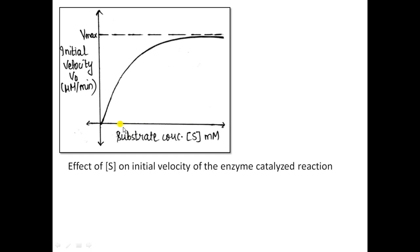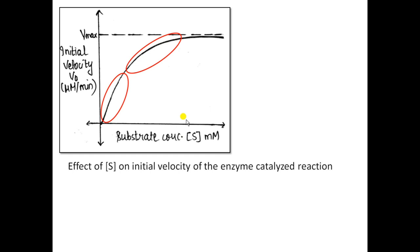Looking at the results: plotting different substrate concentrations on the x-axis and the initial rate on the y-axis gives the Michaelis-Menten plot — the effect of substrate concentration on initial velocity of an enzyme-catalyzed reaction. At low substrate concentration, increasing substrate gives a linear increase in rate. Beyond that, further increases in substrate concentration still increase the rate but less dramatically. Finally, further increase in substrate concentration gives no increase in initial velocity — a plateau is achieved — and this plateau represents the maximum velocity, Vmax.